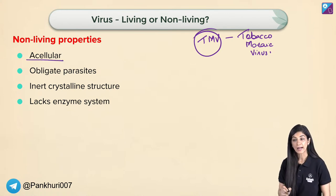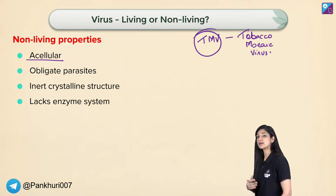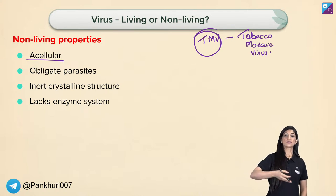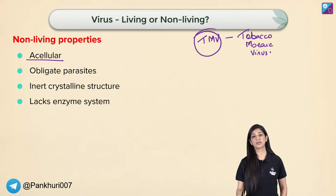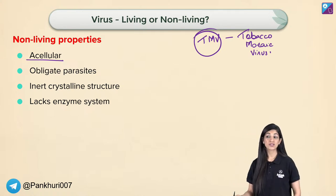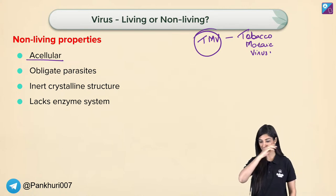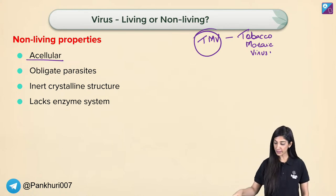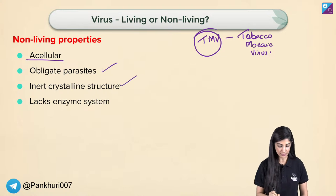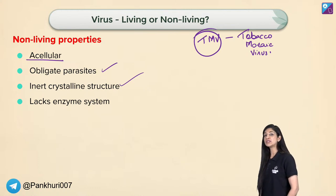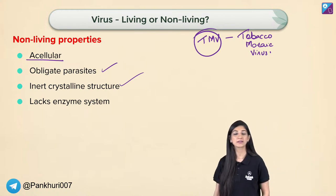Beijerinck demonstrated that this infectious agent was not a bacterium — he called it contagium vivum fluidum. He conducted an experiment: if he isolated this organism from an infected tobacco plant, it would still be infectious. This was the foundation of virology. In the next class, the classification of viruses will be covered — animal viruses, plant viruses, RNA viruses, DNA viruses, single-stranded, double-stranded, bacteriophages — including content from Class 12.